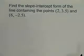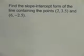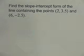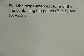Why don't you go ahead and take a look at this next example on your own? You're asked to find the slope-intercept form of the line containing the following points: (2, 3.5) and (6, negative 2.5). Give this one a try, and then check back with me when you've completed it.